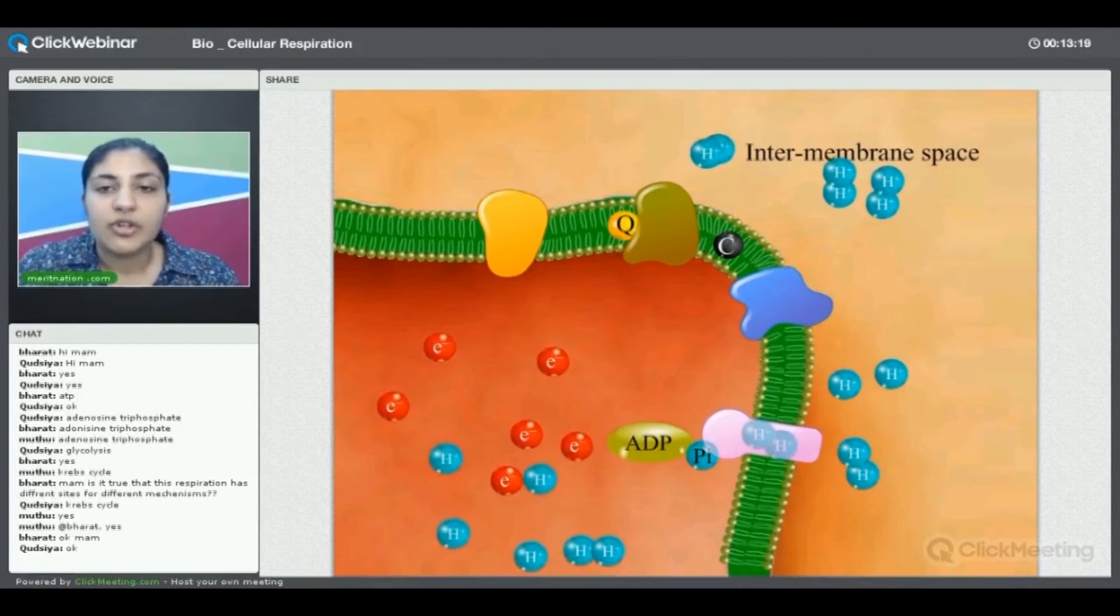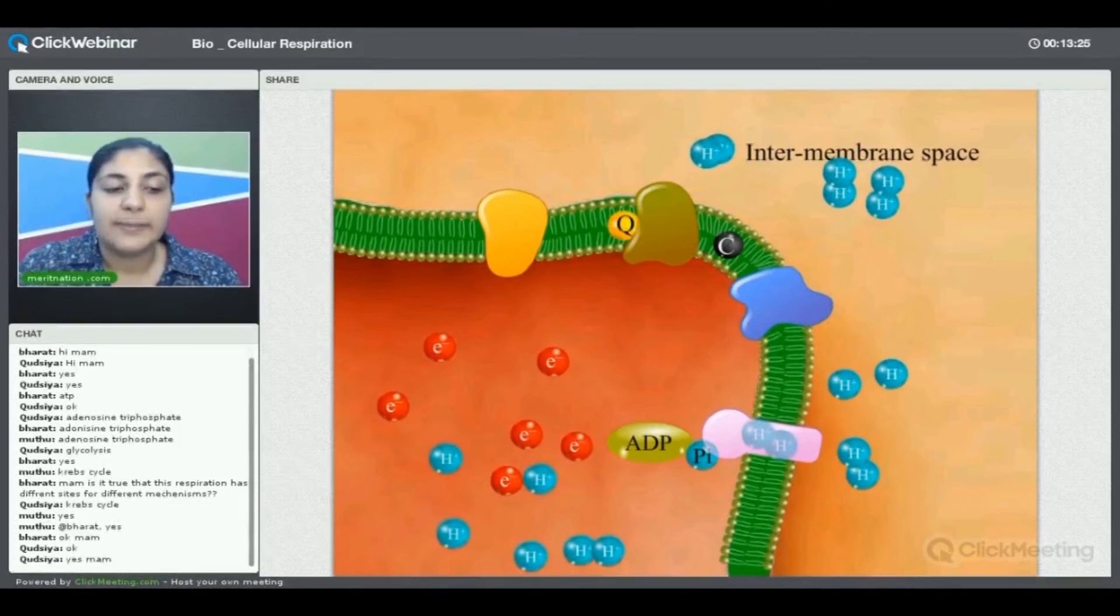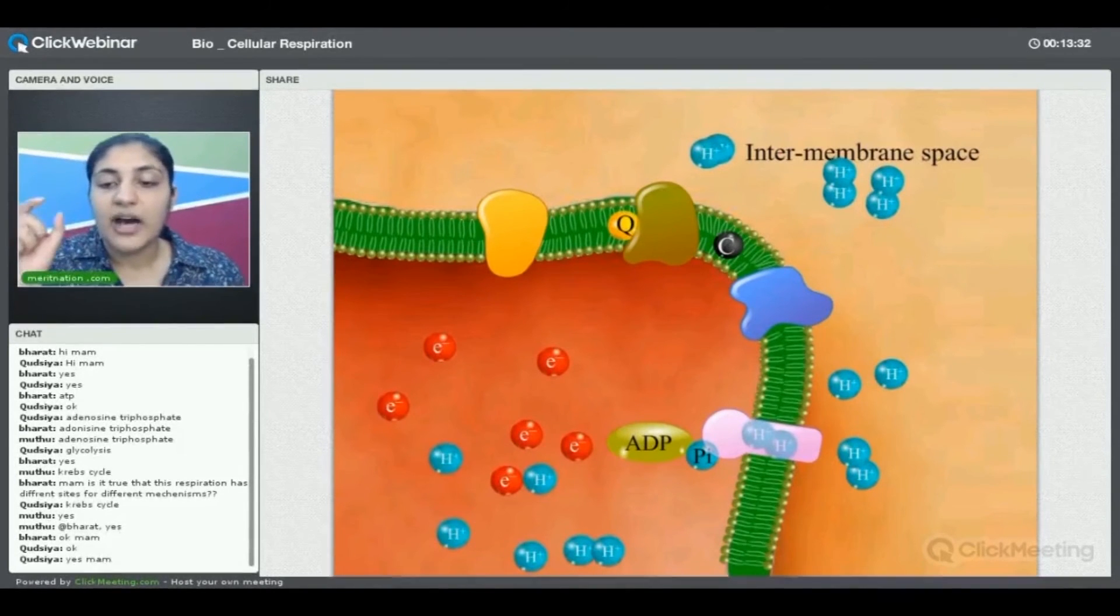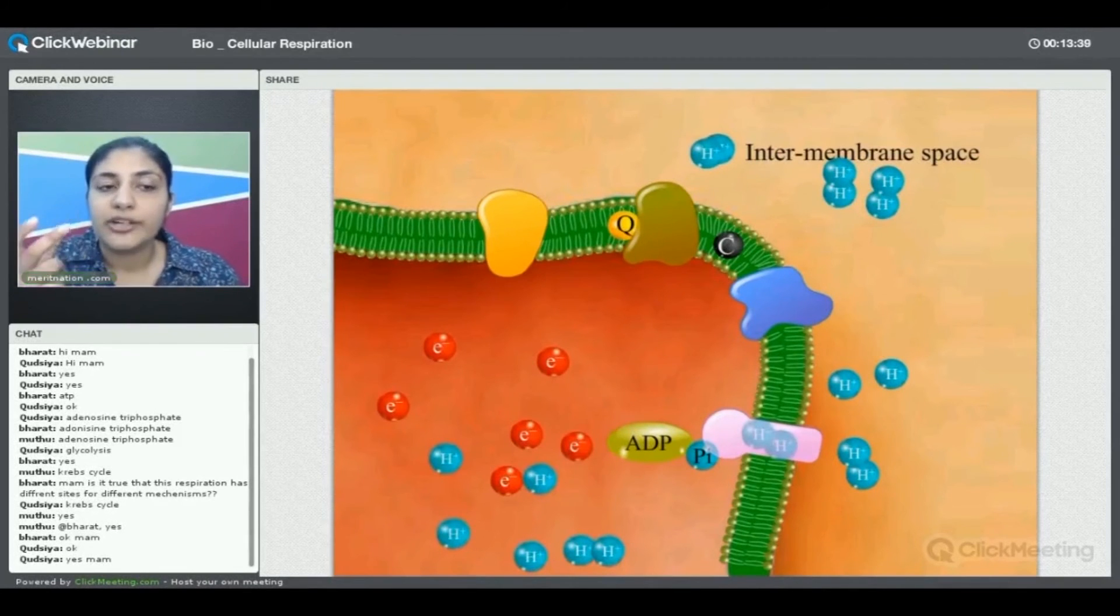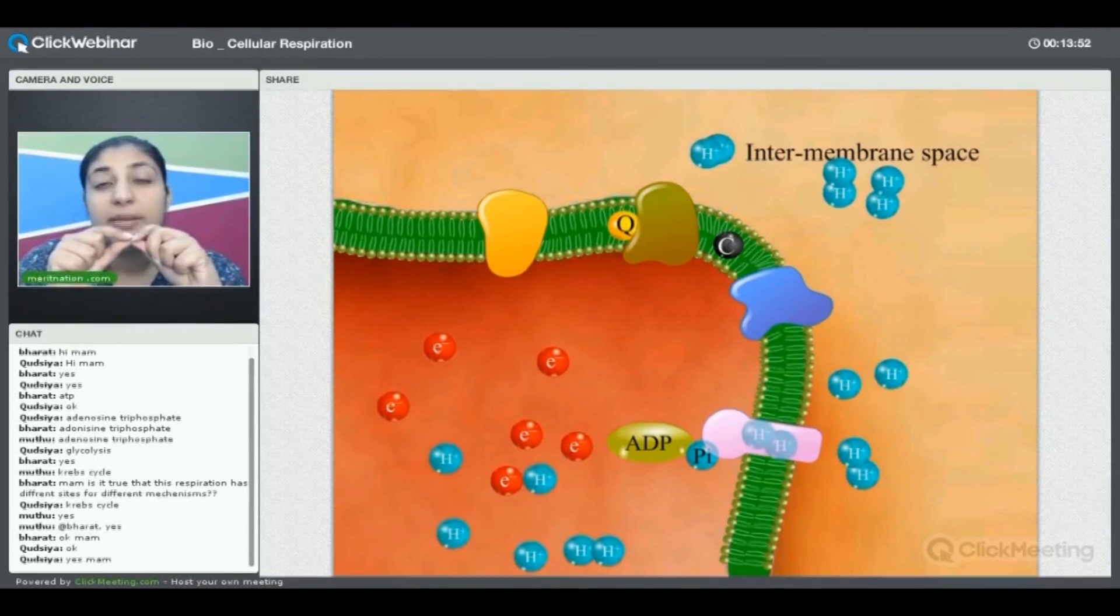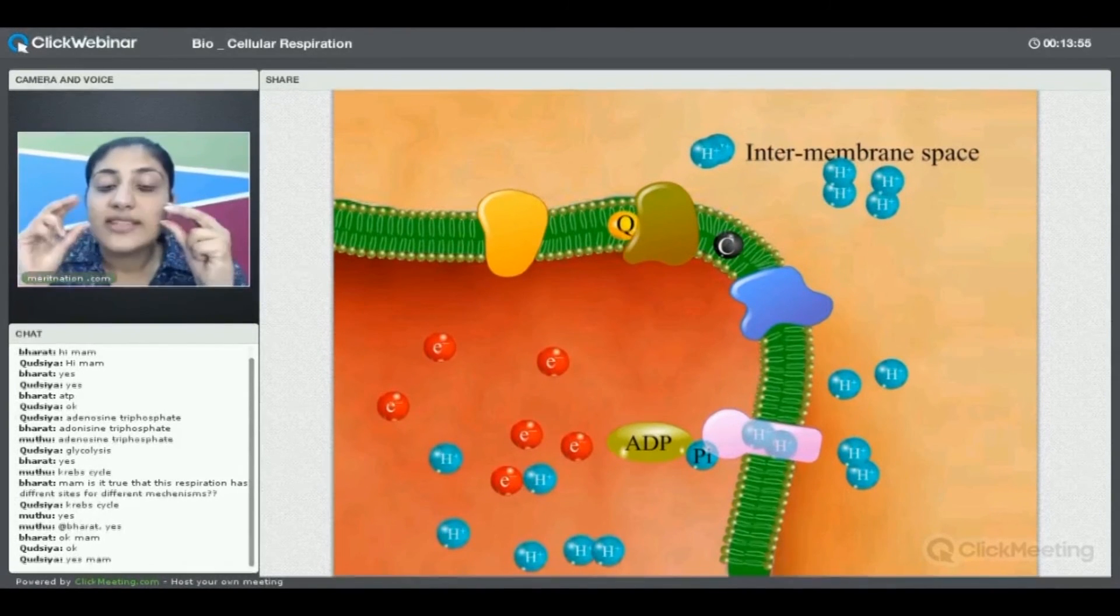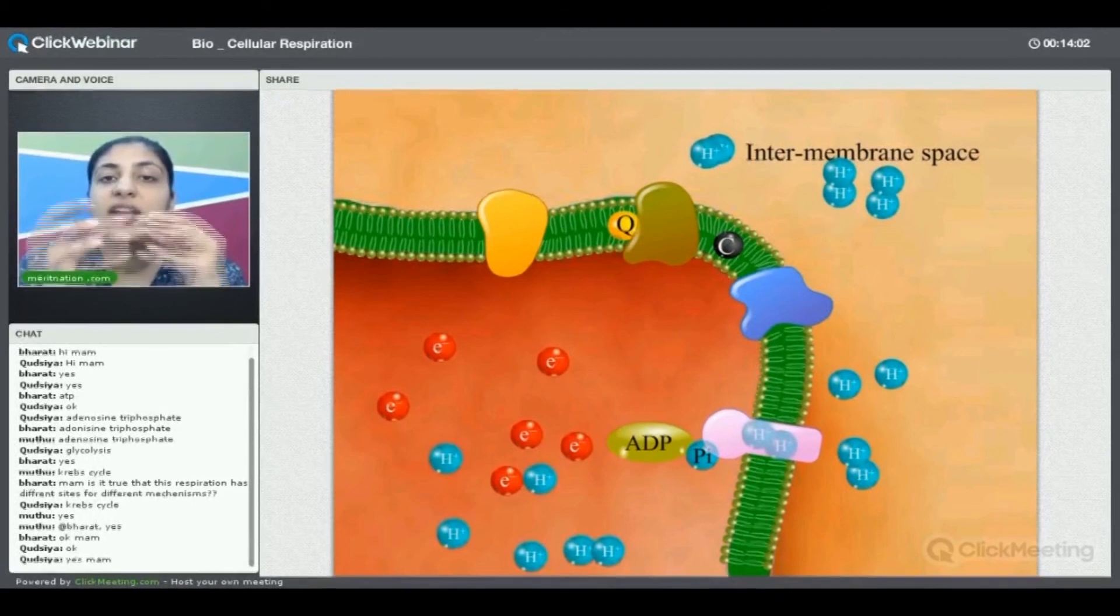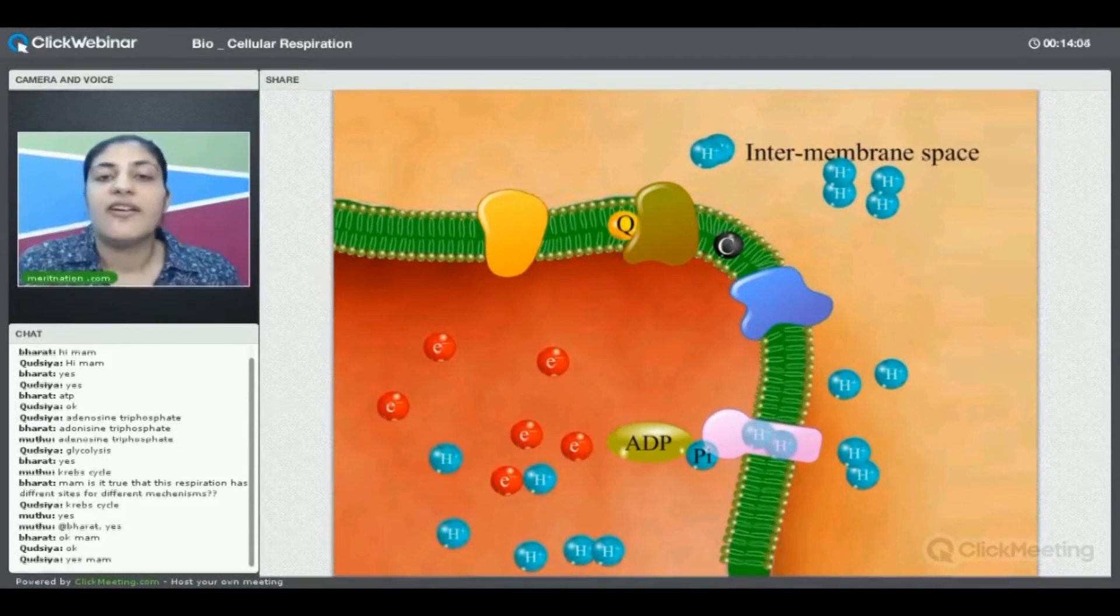What happens in this case also is when we make the protons move through the ATP synthase, these protons start to rotate the ATP synthase. The part protruding inside the matrix region is like a turbine, it's like a motor, it starts to rotate. When it starts to rotate, ADP and inorganic phosphate are present very near to these blades of this molecular turbine. Since they are present there, when it starts to move they literally get compressed because of that movement, because of which the ADP and Pi join together to give us the ATP molecule.